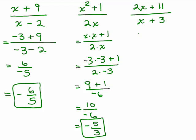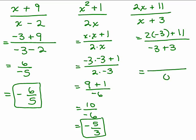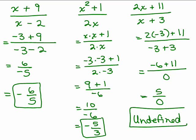And the last one — again, we're putting in negative 3 for x. The denominator is 0, and what is 5 divided by 0? It's undefined. It doesn't reduce; you can't say what number it is — it's undefined. Any time you have a 0 in the denominator, a fraction is undefined.